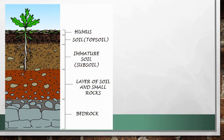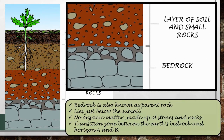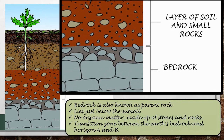The last horizon is Horizon C. The bedrock, also known as the parent rock, lies just below the subsoil. It contains no organic matter and is made up of stones and rocks, so it is very hard. This layer represents a transition zone between the earth's bedrock and Horizons A and B.